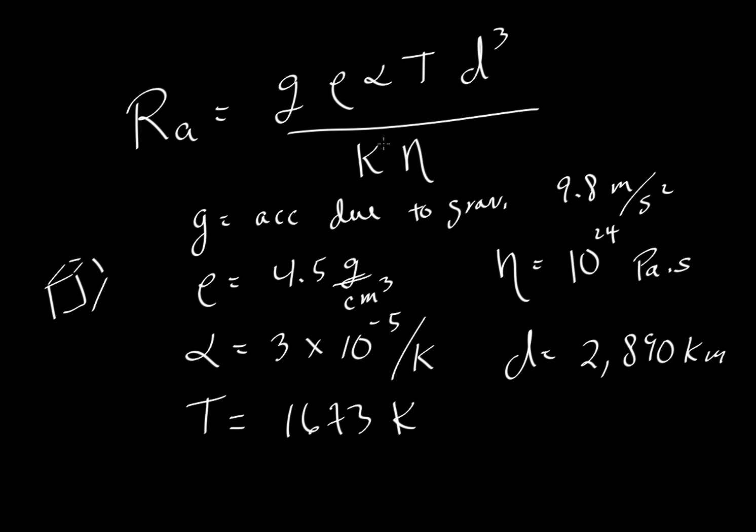Oh, and we've forgotten the value for κ, the thermal diffusivity. κ is equal to, well, we'll use a value of 5.6 × 10⁻⁷, and that's in units of meters squared per second. This is different than the thermal conductivity. This is equal to thermal conductivity divided by heat capacity times density.